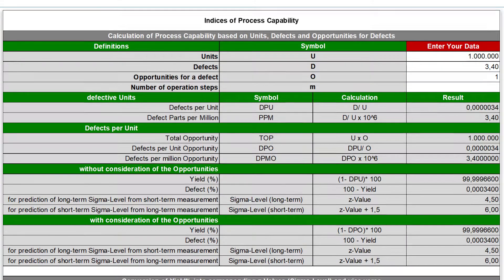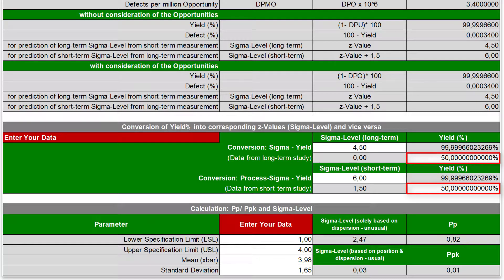If in another case the performance level is given as a percentage value, for example yield, then you can transform it into a sigma level, and vice versa.